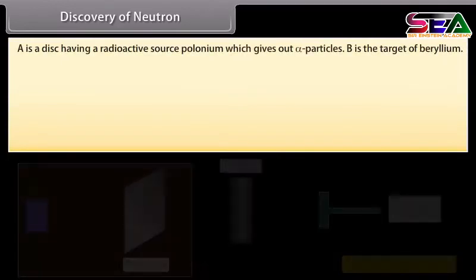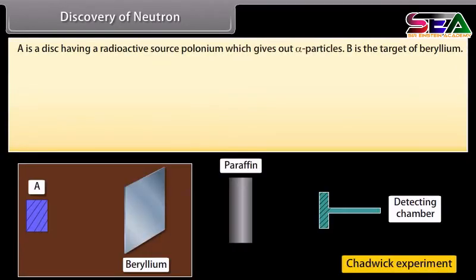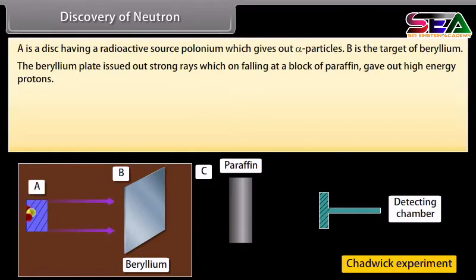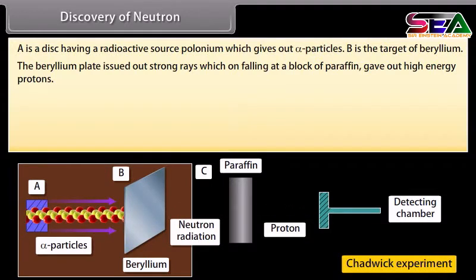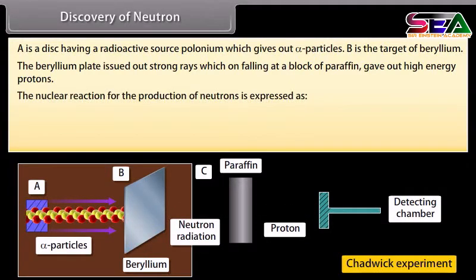Discovery of neutron: A disk with a radioactive source, polonium, emits alpha particles. B is a target of beryllium. Both A and B are placed in an evacuated chamber C. The beryllium plate issued out strong rays which, on falling on a block of paraffin, gave out high energy protons. The nuclear reaction for the production of neutrons is expressed as a corresponding equation.